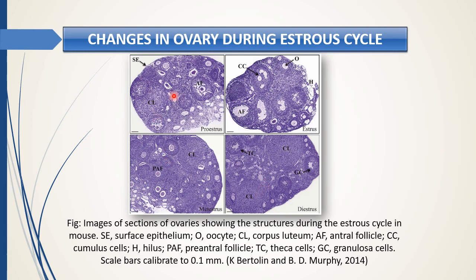GnRH from the hypothalamus dictates the pituitary to produce follicle-stimulating hormone and luteinizing hormone. FSH controls follicular development, LH controls ovulation, and both gonadotropins — FSH and LH — control the two most important hormones: estrogen and progesterone. In the following discussion, I will talk about the role of estrogen and progesterone in functioning and changing the entire uterus during proestrus, metestrus, and diestrus.